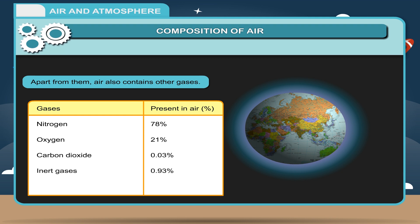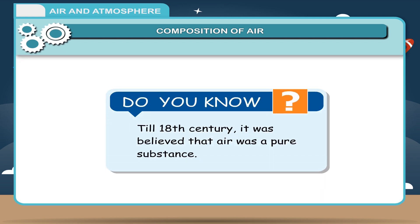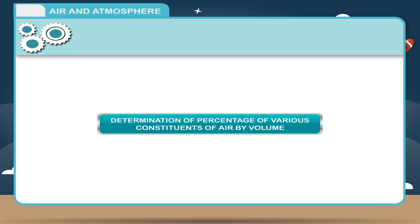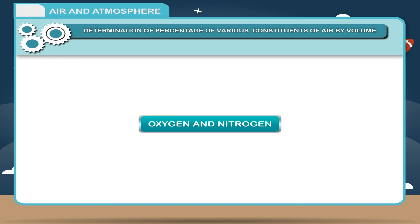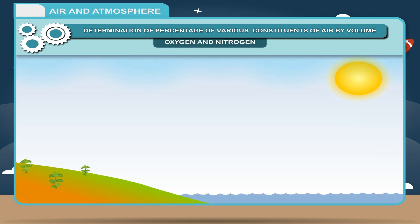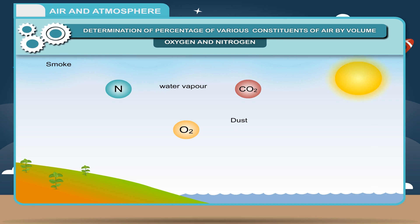Dust particles and moisture are also present in variable amounts. Did you know that till the 18th century it was believed that air was a pure substance? Air is a mixture of gases namely nitrogen, oxygen, carbon dioxide, water vapor, and dust and smoke as pollutants.